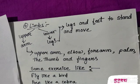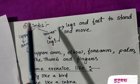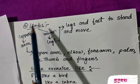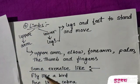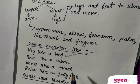With the help of our limbs we can do so many things and exercises. Some exercises I have written here — you can see some exercise poses like flying like a bird, like a cobra, and others.